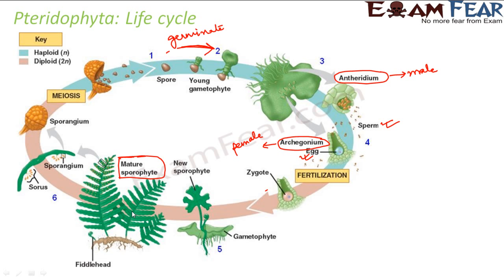The basic concept of reproduction is that you need gametes, which are produced by the gametophyte. The gametes fuse to produce a zygote, the zygote forms the sporophyte, the sporophyte releases spores, and the spores again form the gametophyte. This process is common to all types of plants.